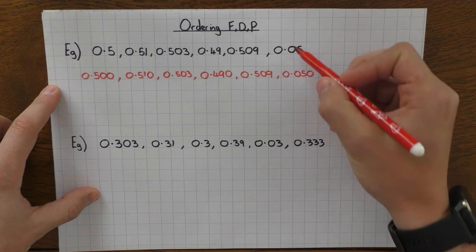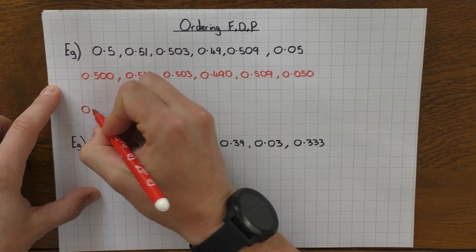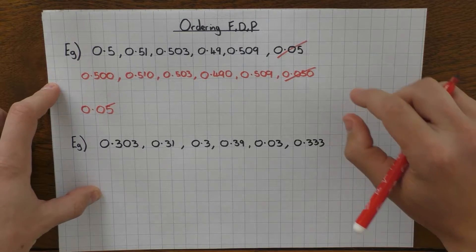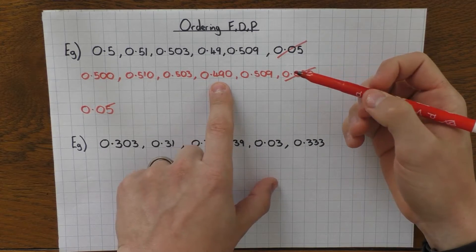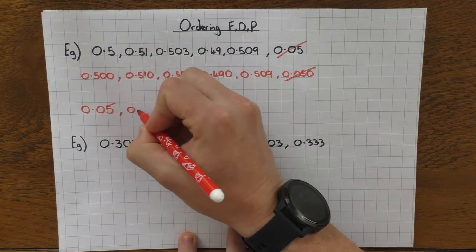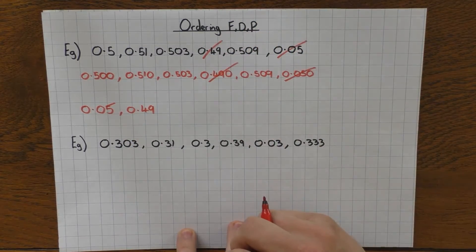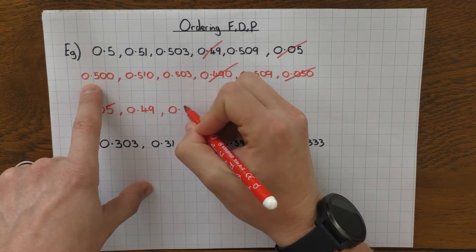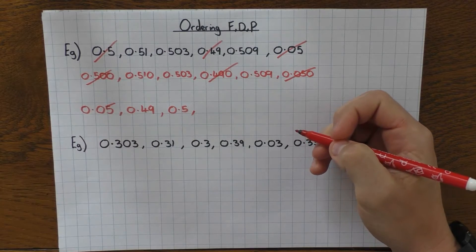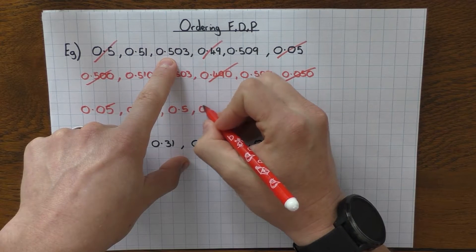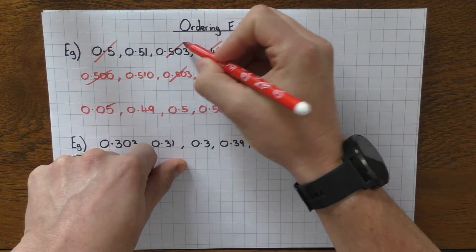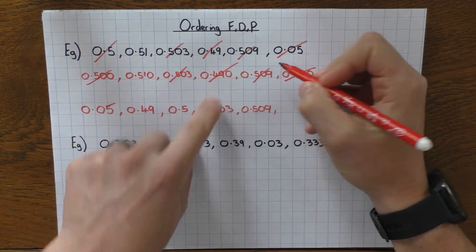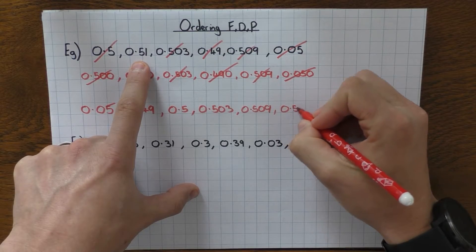I'm going to go back to the originals. So this one here was the one we wanted to start with - 0.05. And once you're done, cross them off so you know you don't need to repeat them. So what was the next one? We have 490, which was the 0.49 from the original. What's next? We've got 509, 503, 510 - the 0.5 is the next one. And then 503, which is the original. Then 510, so that's the 0.509. And then we have 0.51.